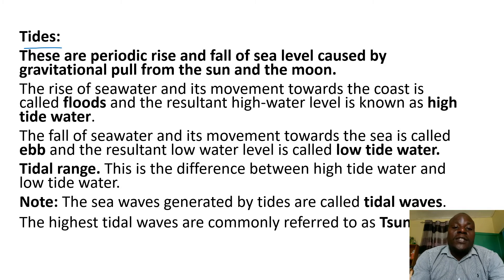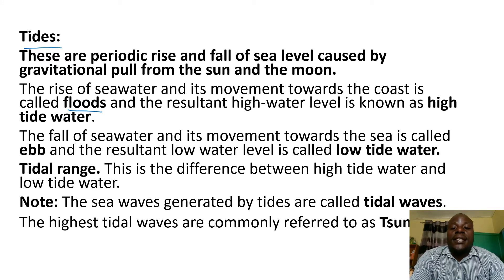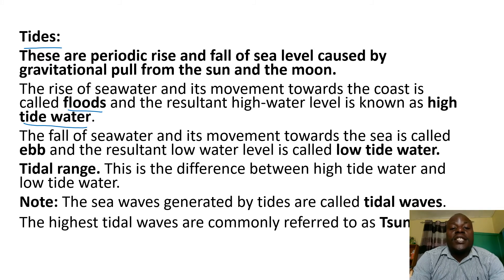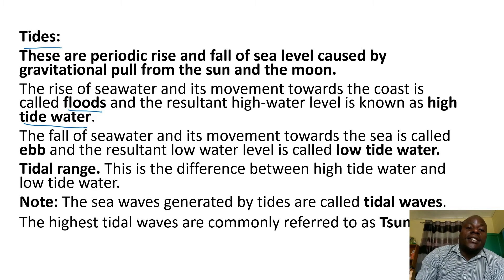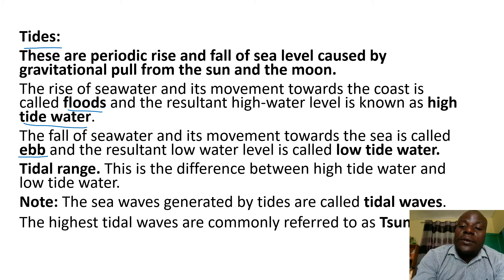The rise of seawater and its movement towards the coast is called flood, and the resultant high water level is known as high tide water. The fall of seawater and its movement towards the sea is called ebb, and the resultant low water level is called low tide water.